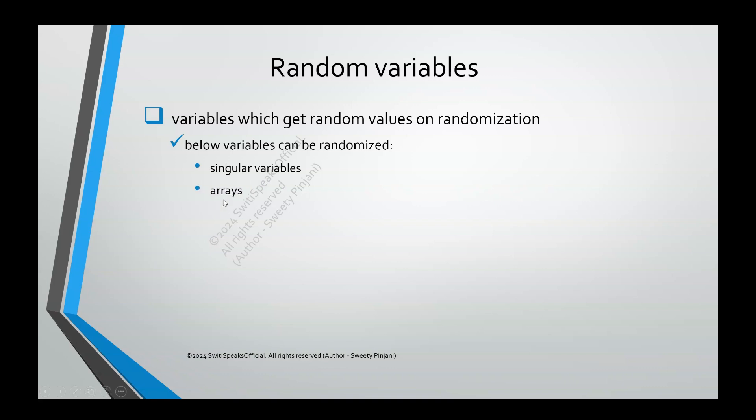Then we have certain kinds of arrays. We had packed arrays, unpacked arrays, dynamic arrays, associative arrays, and queues. All those things can also be randomized.